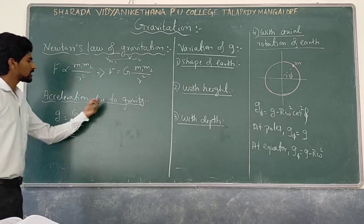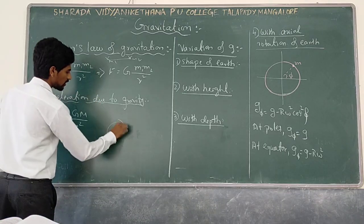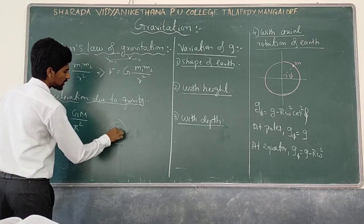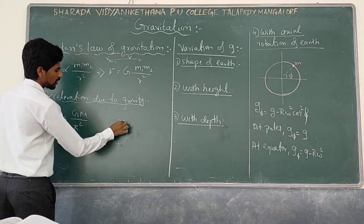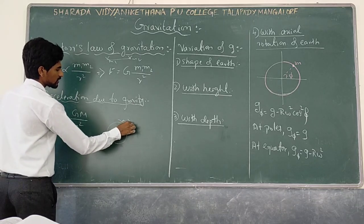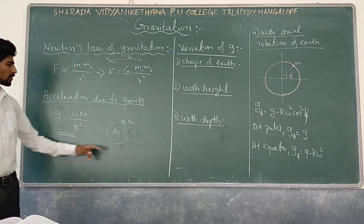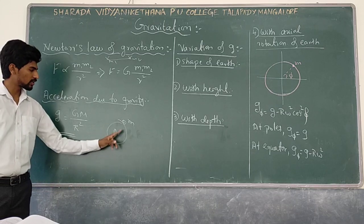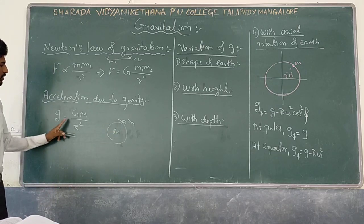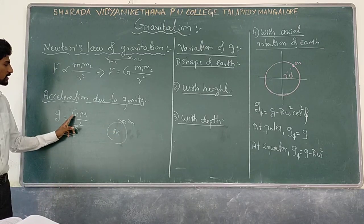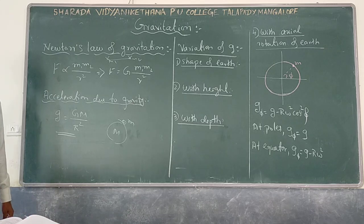This is acceleration due to gravity. That means Earth has mass M and there is an object of small mass m. Then the acceleration because of the gravitational force of Earth is given by g is equal to GM by R square.